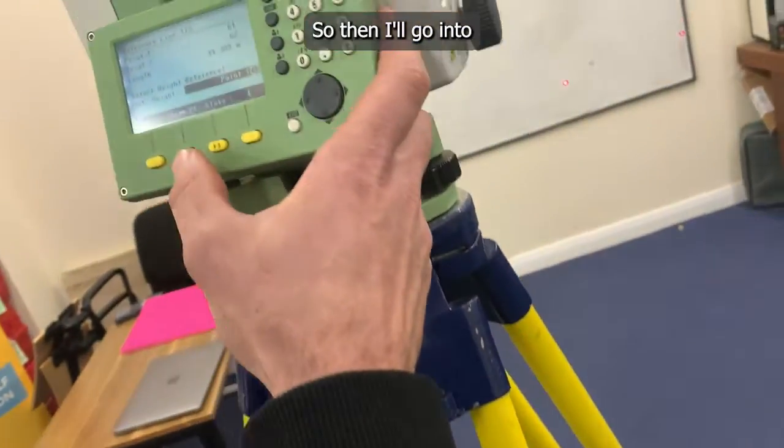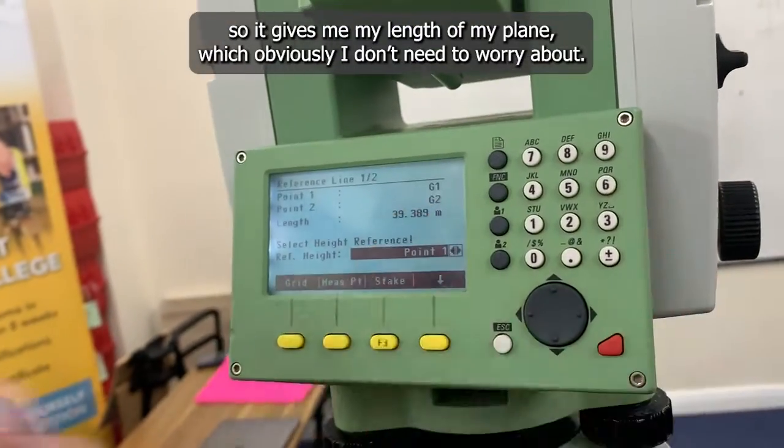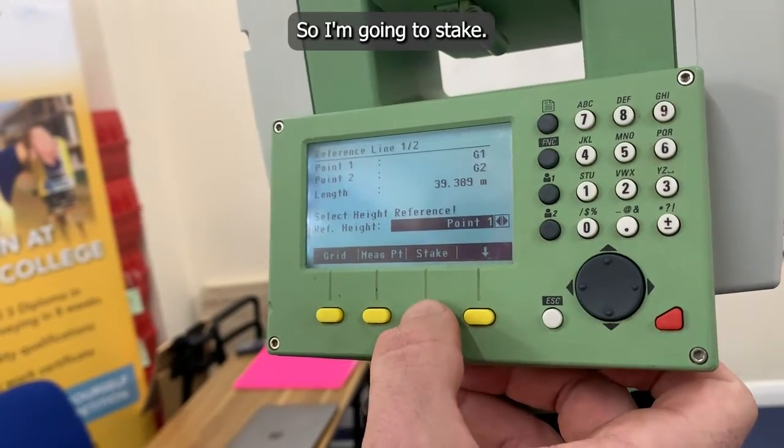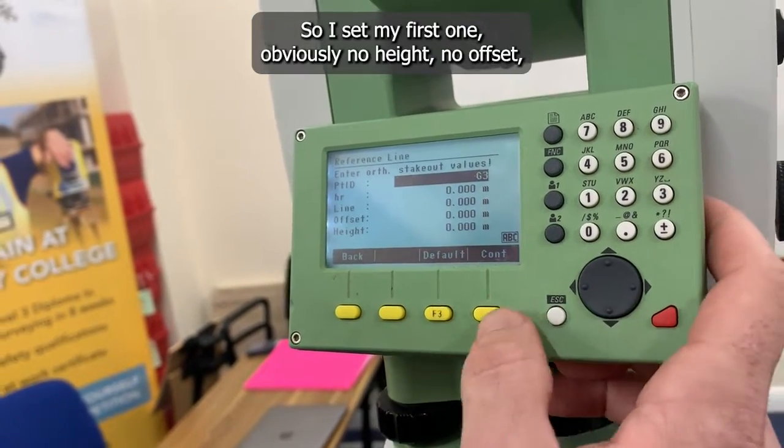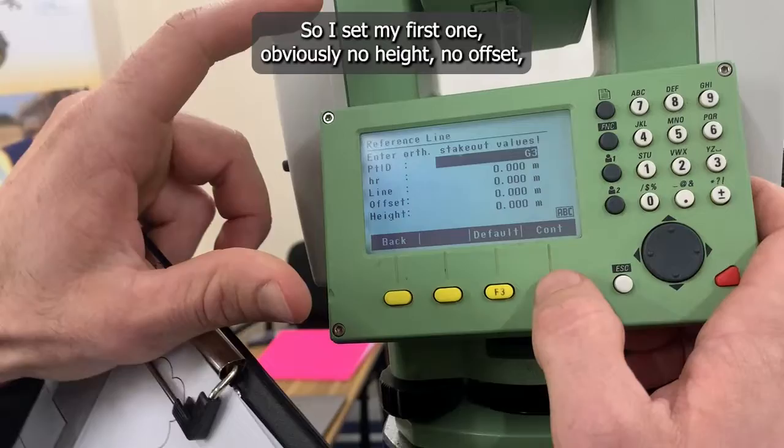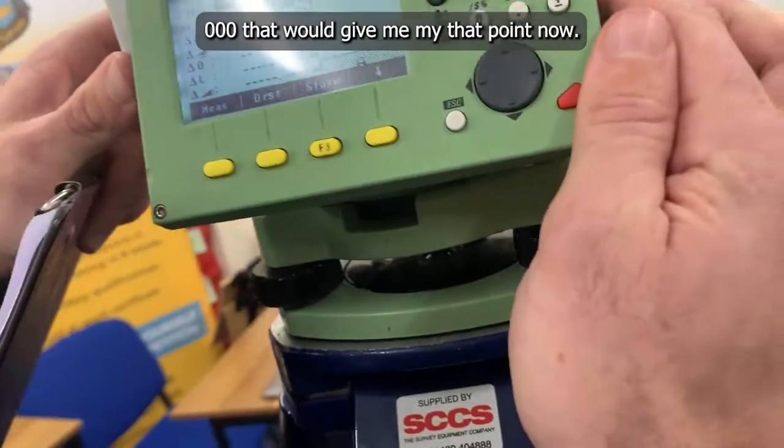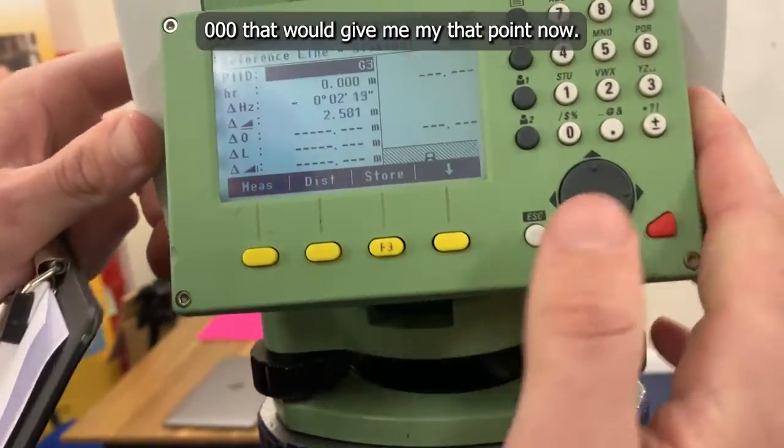Then I'll go into—it gives me my length of my plane, which I don't need to really worry about. I'll go into stake. I'll set my first one, obviously, no height, no offset. Zero, zero, zero. That will give me that point there.